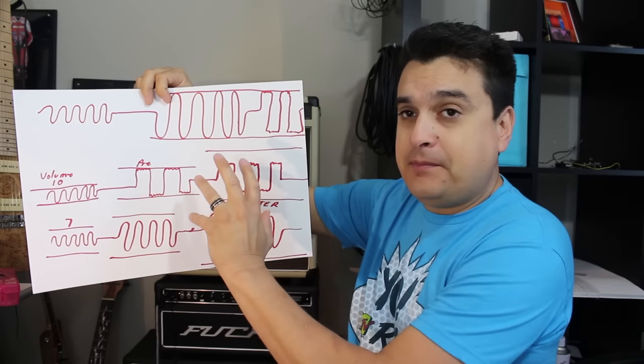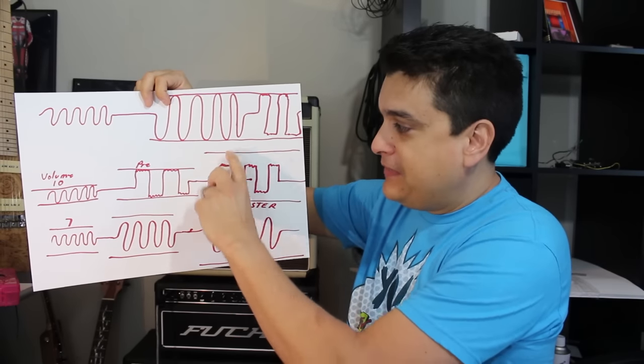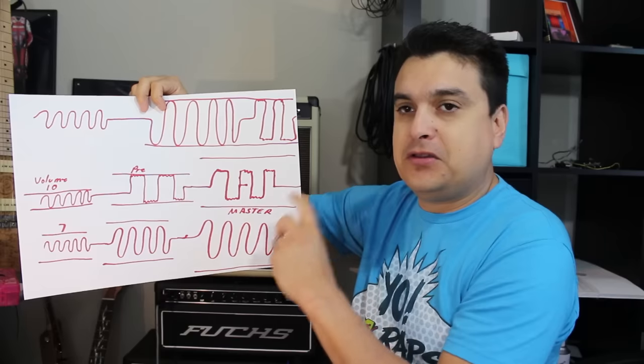And then we can turn our master volume down and see what happens? We've messed up, we've compressed that signal in our preamp, and then we've turned our master volume down so that it's basically come through at a lower volume.